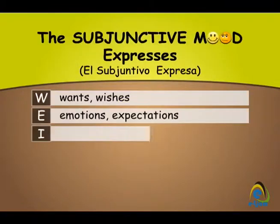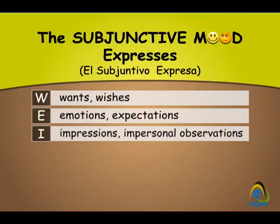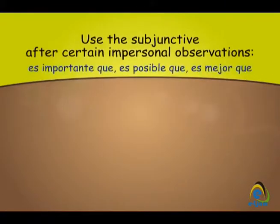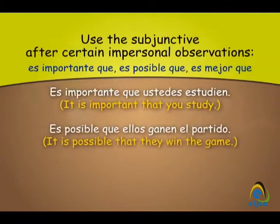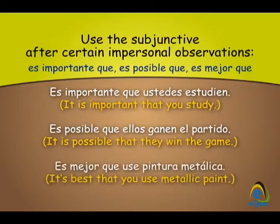Now we look at the I in weirdo. The subjunctive is used after certain impersonal observations, such as es importante que, es posible que, es mejor que, and so on. Es importante que ustedes estudien — it's important that you study. Es posible que ellos ganen el partido. Es mejor que use pintura metálica.